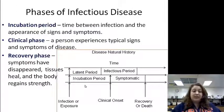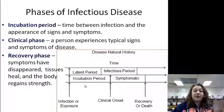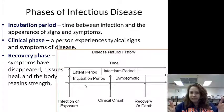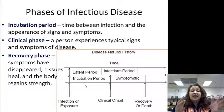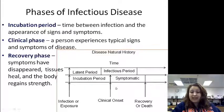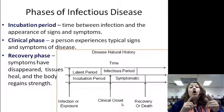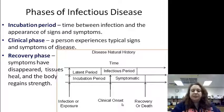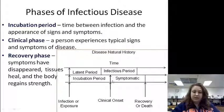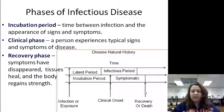Phases of infection: we have the incubation period, which is the time between the infection and the appearance of signs and symptoms. The clinical phase is when a person experiences typical signs and symptoms of the disease — once we get symptomatic, that's the clinical phase. Then you have the recovery phase, where symptoms have disappeared, your tissues are healing, and your body is gaining strength — or death. On the timeline: exposure to infection through to clinical onset is the incubation period, then the symptomatic or clinical phase, then recovery or death.